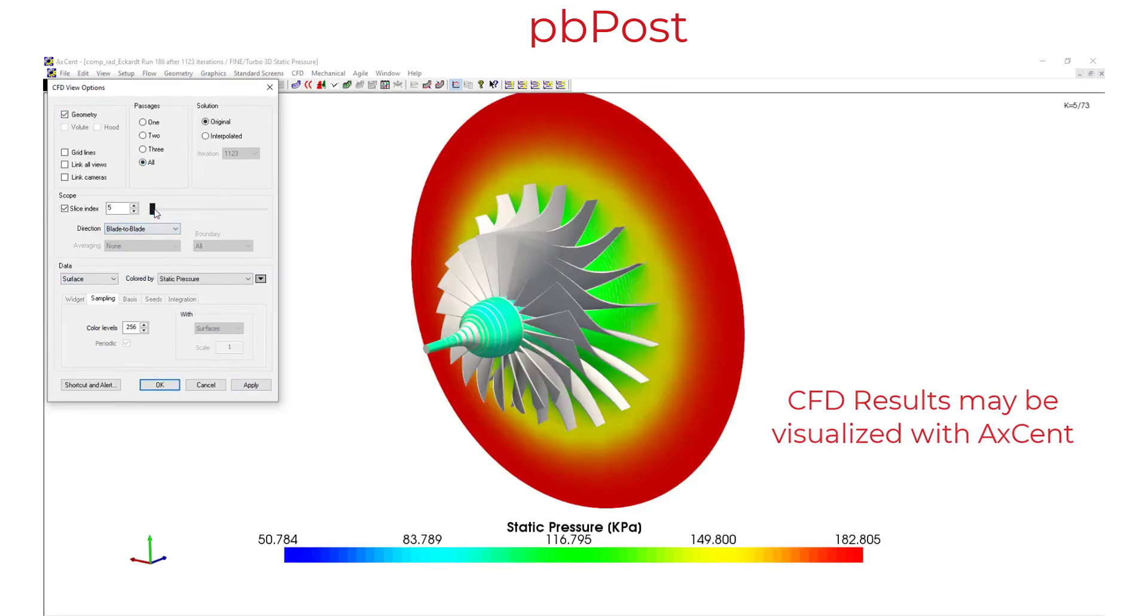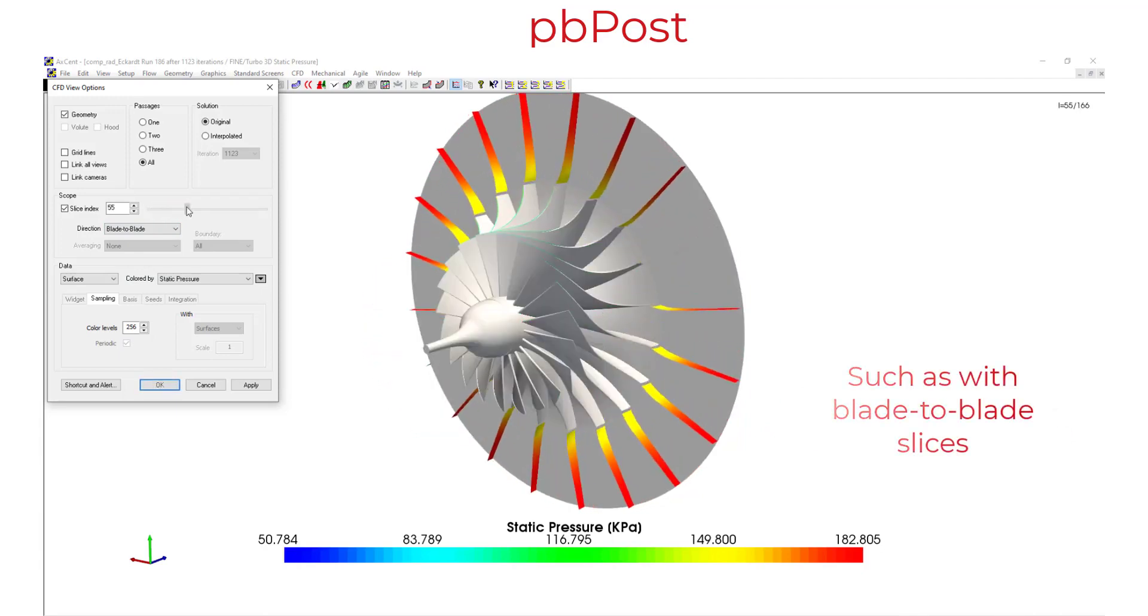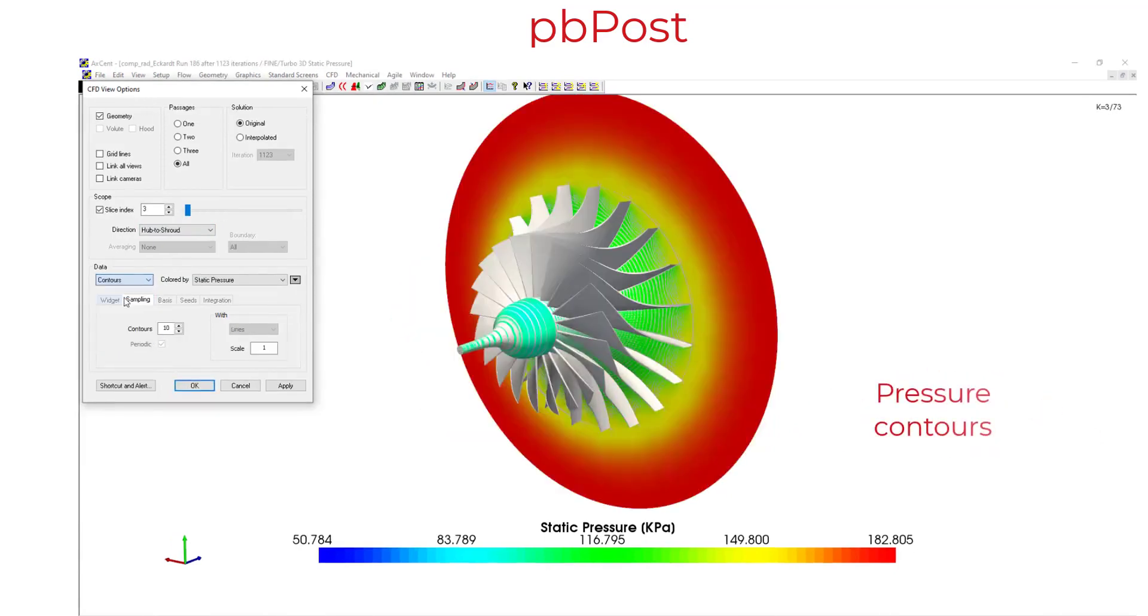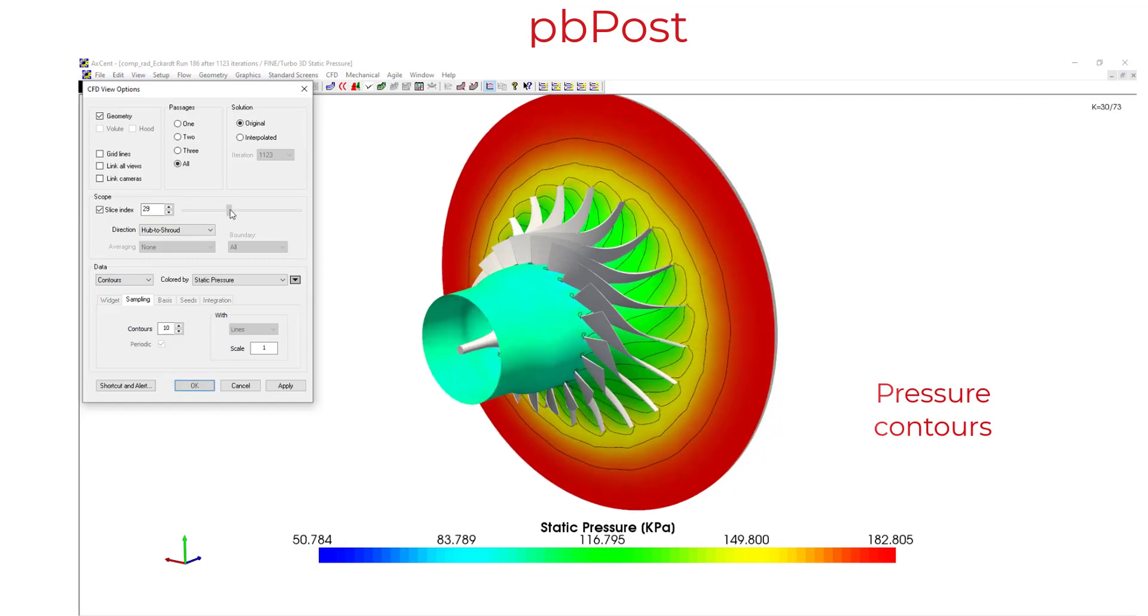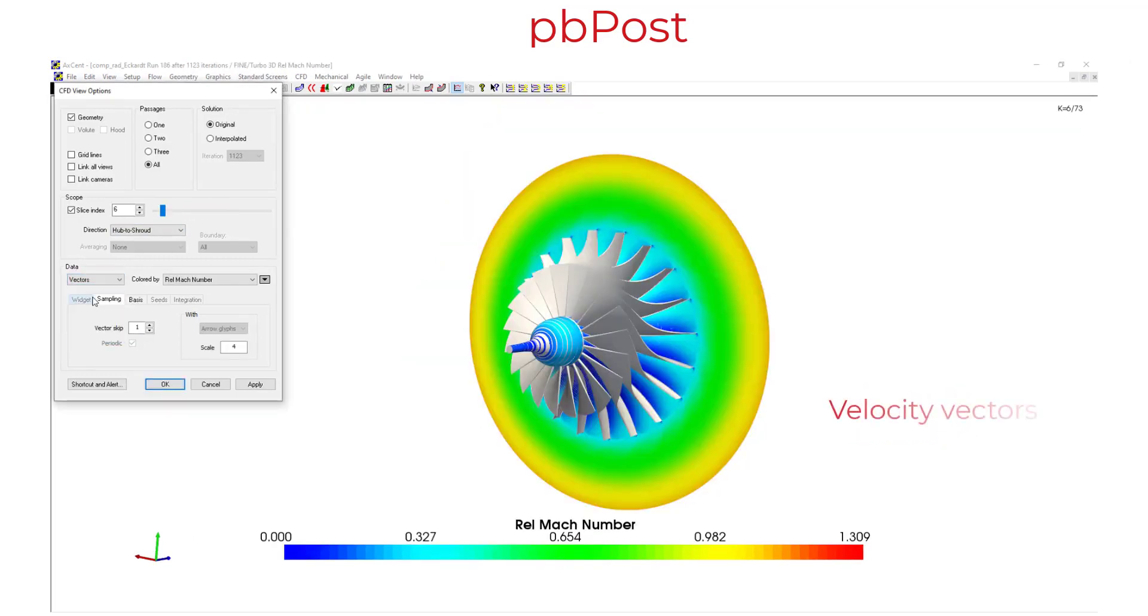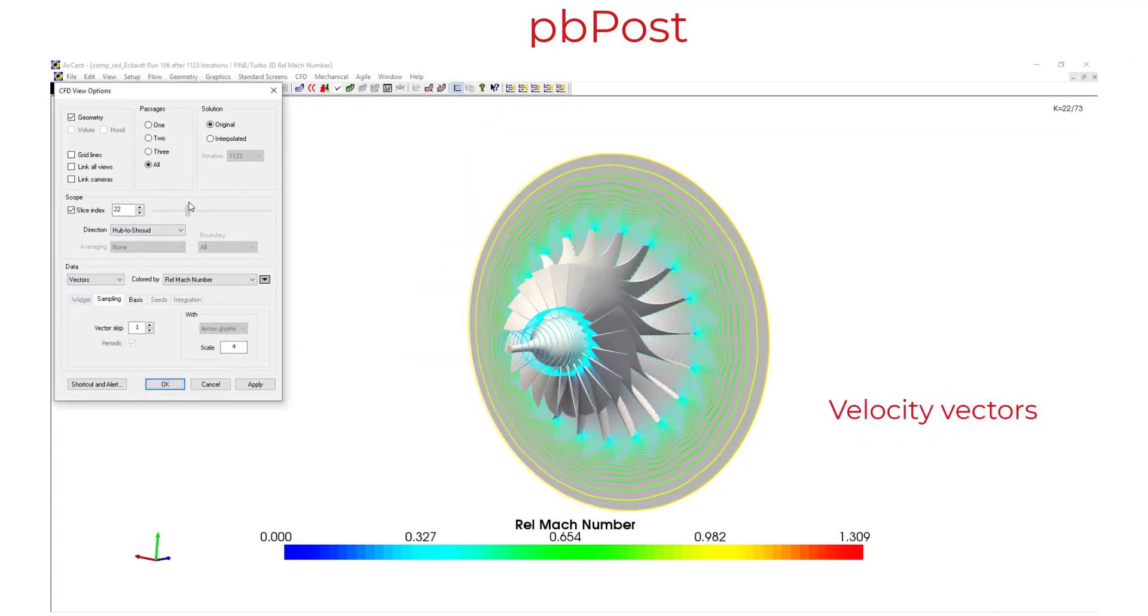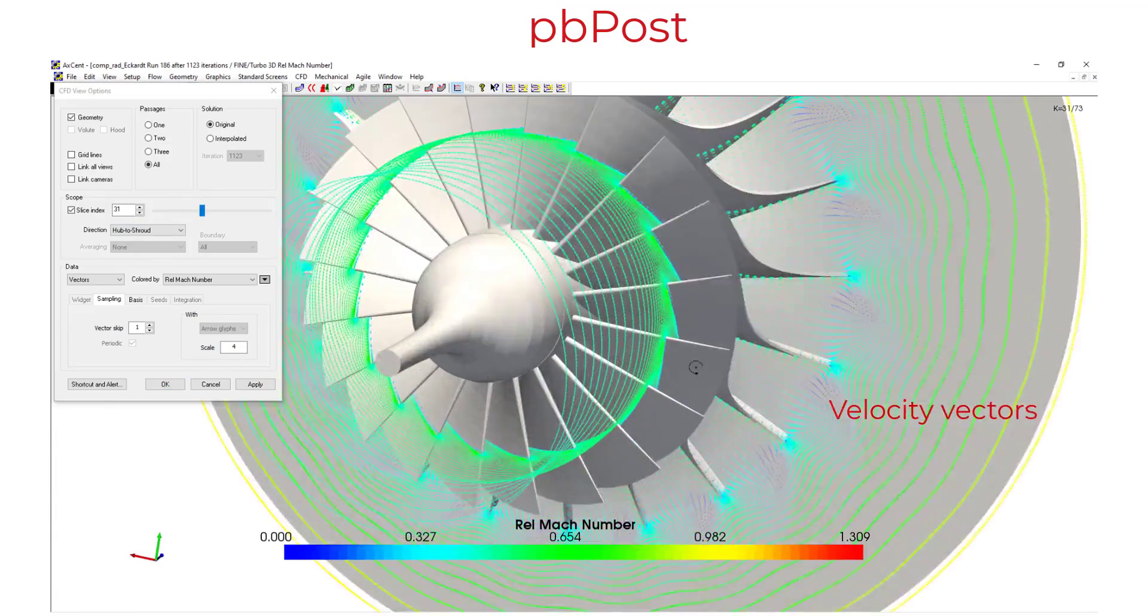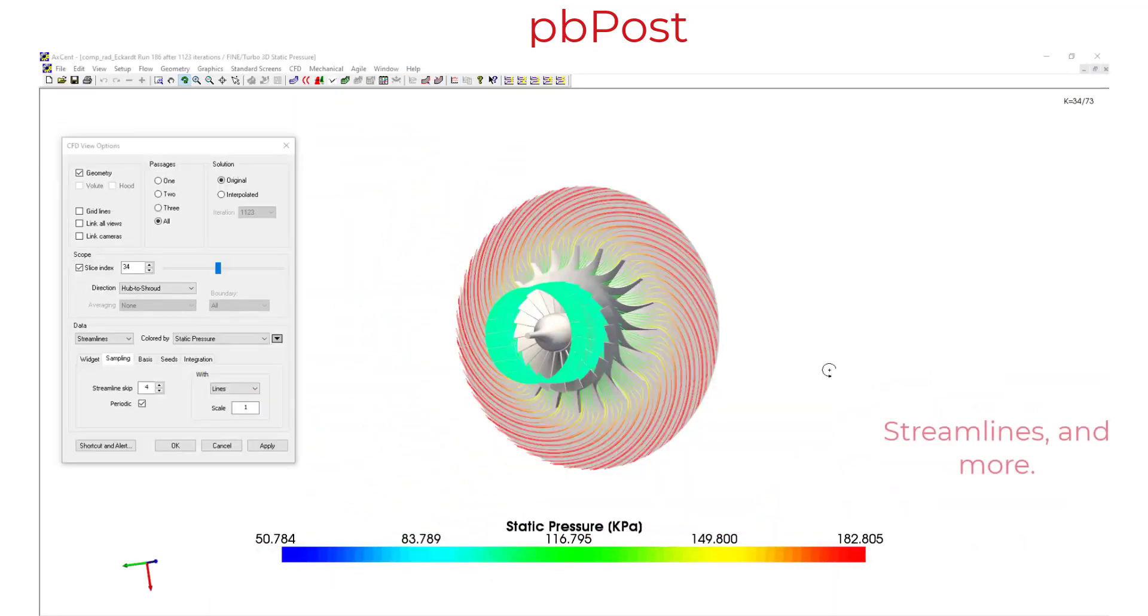Here we see some 3D color contour plots. We can look blade to blade. We can see hub to shroud results. And we can look at different things like stream tubes, vectors, in conjunction with our contour plots.